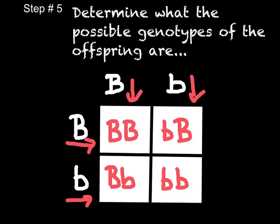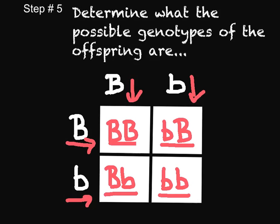Now each one of these boxes has a different set of alleles or letters. There is a purebred dominant. And here — the little B before the big B — it doesn't matter. Remember in class, as long as there is a big letter in the box, that will be the winner, so it doesn't matter what order it comes in. And here is our purebred recessive.